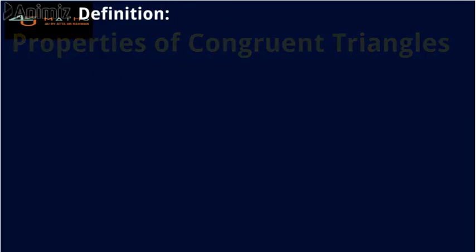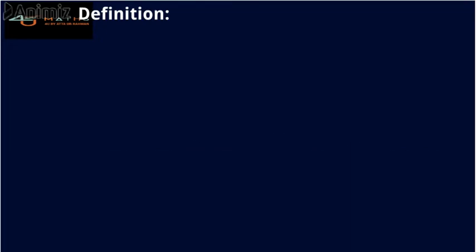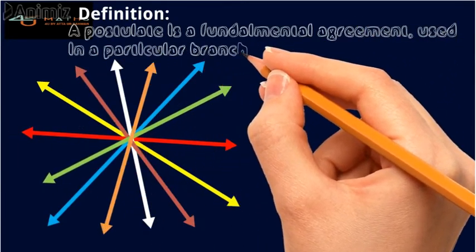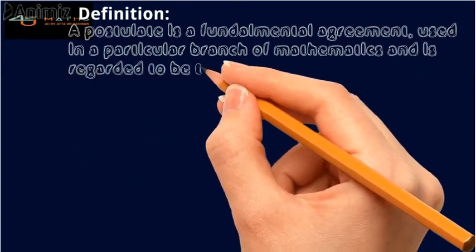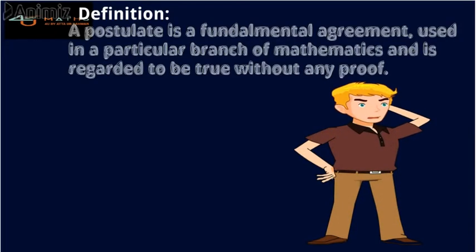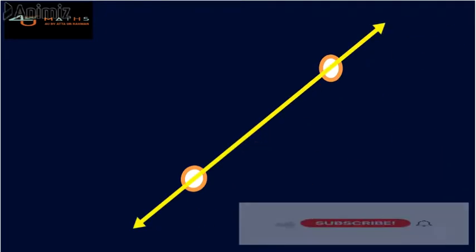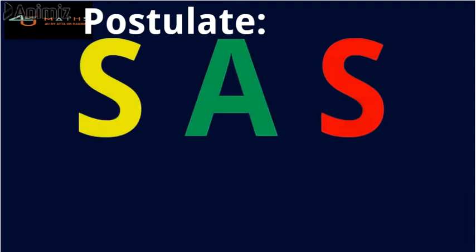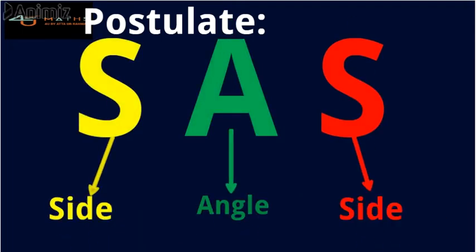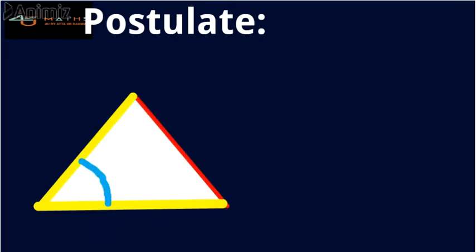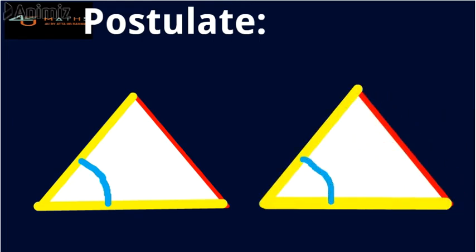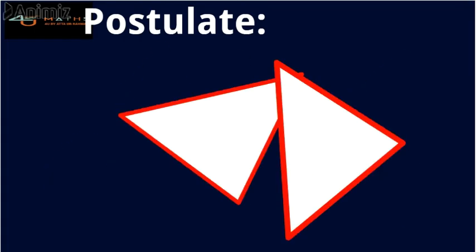Next definition: postulate. A postulate is a fundamental agreement used in a particular branch of mathematics and is regarded to be true without any proof. For example, one and only one line can pass through two different points. Postulate SAS — that is, side-angle-side: if two sides and their included angle in one triangle are congruent to two sides and their included angle in another triangle, then the two triangles are congruent.